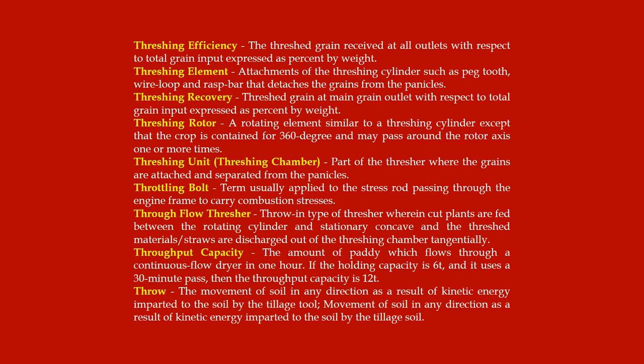Threshing efficiency: the threshed grain received at all outlets with respect to total grain input, expressed as percent by weight. Threshing element: attachments of the threshing cylinder such as peg tooth, wire loop, and rasp bar that detach the grains from the panicles. Threshing recovery: threshed grain at the main grain outlet with respect to total grain input, expressed as percent by weight. Threshing rotor: a rotating element similar to a threshing cylinder except that the crop is contained for 360 degrees and may pass around the rotor axis one or more times.